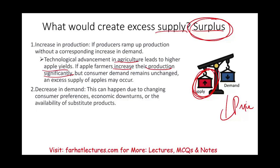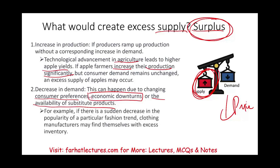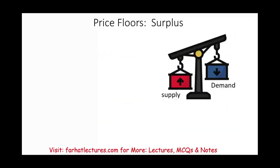Decrease in demand can also create a surplus. Suddenly nobody wants to buy pizzas or apples. This can happen due to change in consumer preference, an economic downturn with people eating at home, or the availability of a cheaper substitute like burgers. For example, if there's a sudden decrease in the popularity of a particular fashion trend, clothing manufacturers may find themselves with excess inventory. By the time they've done producing it and shipping it from China — mid-summer, late summer — no one's interested in that fashion anymore, and retailers will have excess inventory.